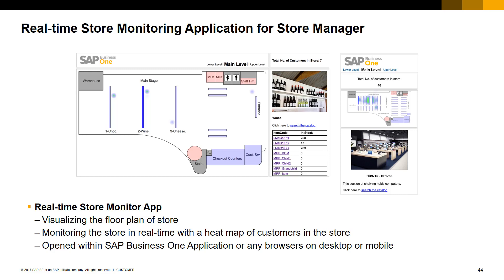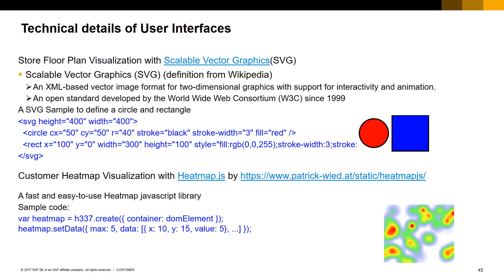The heatmap is shown in SAP Business One as a web page opening inside a custom form. The heatmap application allows the store manager to visualize the floor plan of the store and monitor the store in real time with a heatmap of customers. This heatmap can be opened within SAP Business One or any browser on desktop or mobile. The technology used to implement the floor plan visualization is based on scalable vector graphics. The customer heatmap visualization is based on the heatmap implementation from Patrick Wade.